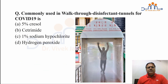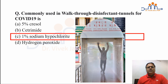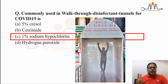A common question: what is the commonly used disinfectant in walk-through disinfectant tunnels for COVID-19? Is it 5% Cresol, Cetrimide, 1% sodium hypochlorite, or hydrogen peroxide? It is 1% sodium hypochlorite solution. Sodium hypochlorite can be used for indoor areas, high-contact surfaces, and metallic surfaces. However, for metallic surfaces, 70% alcohol is also used as a disinfectant.